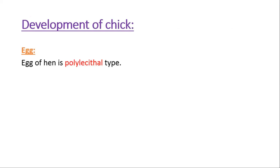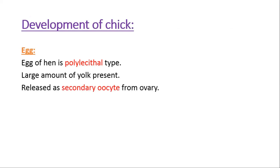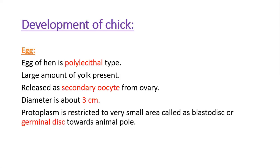A hen's egg is polylecithal, meaning it has a large amount of yolk. The egg of the hen is released as a secondary oocyte from the ovary — you may recall this from oogenesis — and it is about three centimeters in diameter.